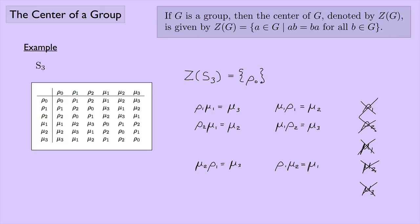So that's it — our center is just the identity element. So it looks like when we have an abelian group, we have the center as the entire group. We just saw an example where we have a non-abelian group and the center was just the identity element. Is it possible to have the center be anything other than the entire group or just the identity element? Let's look at one more example.